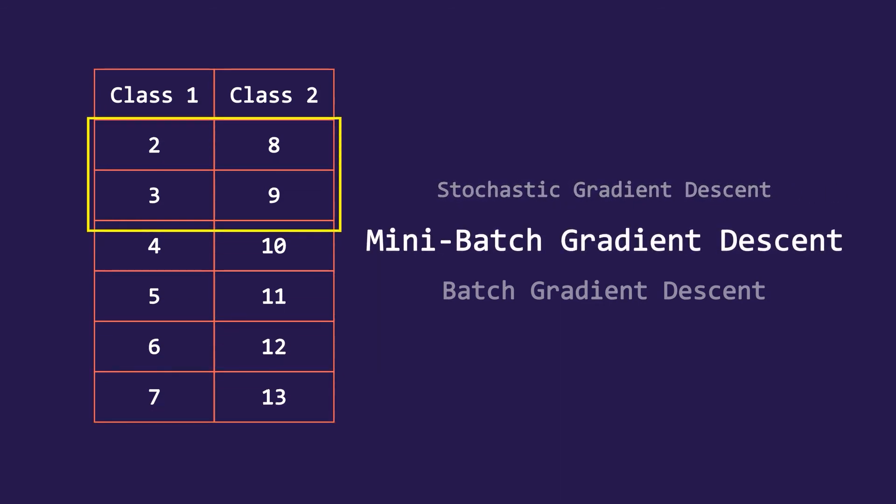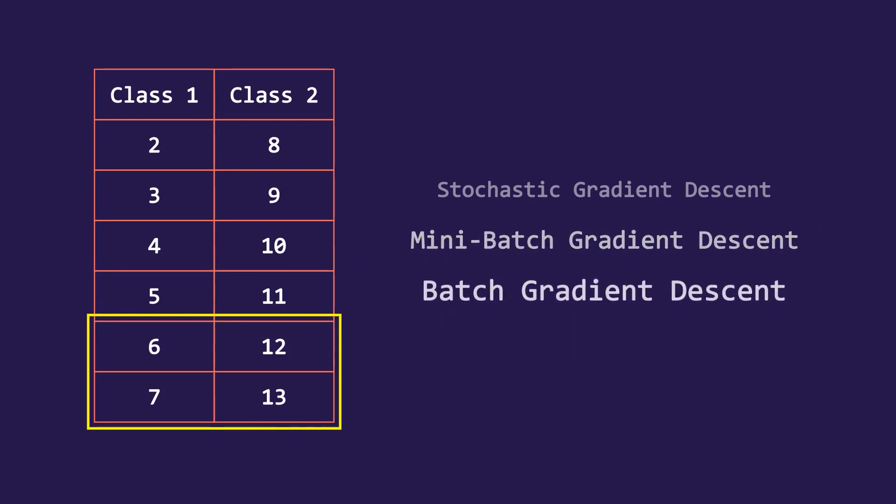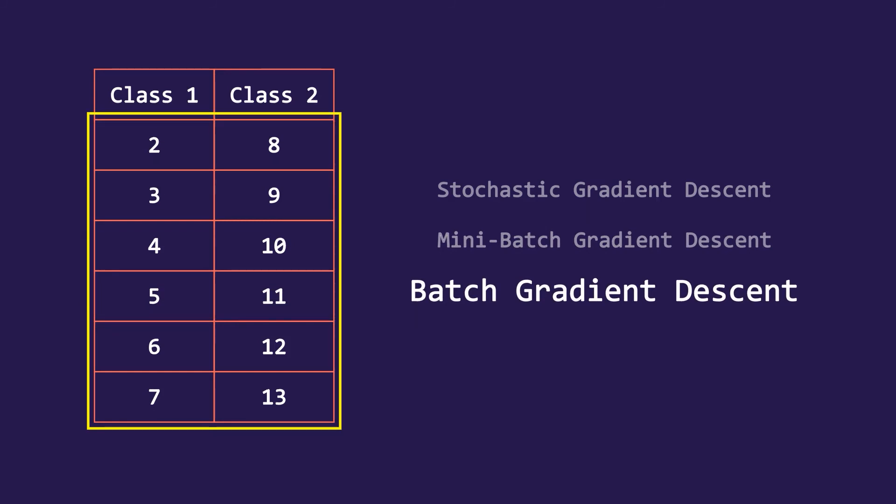In mini-batch gradient descent instead of one row a set of rows is chosen and updates are made. In our case we have chosen two sets of rows that means the number of batches is equal to 2. Usually in real world cases while data has thousands of rows the batch size is kept between 30 to 120. In the batch gradient descent we simply train on the entire dataset at once and we repeat this for n number of epochs.